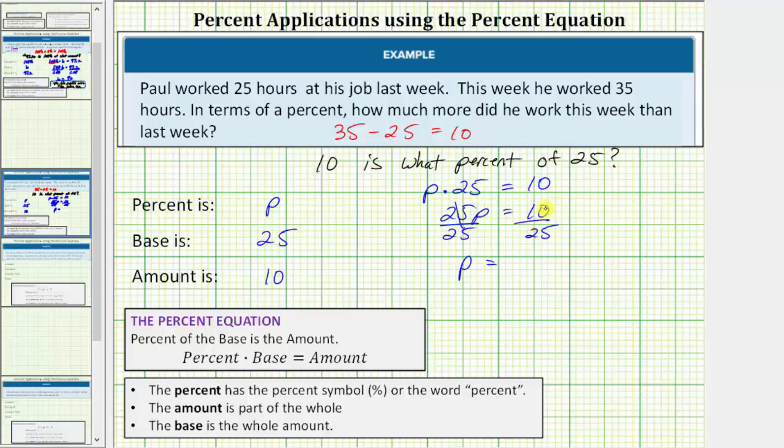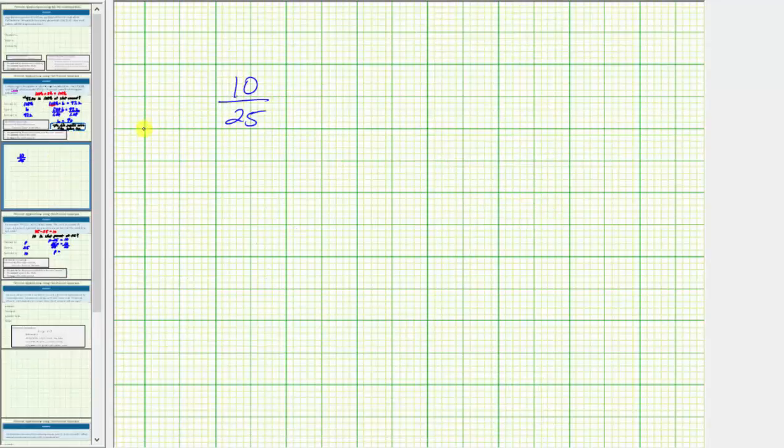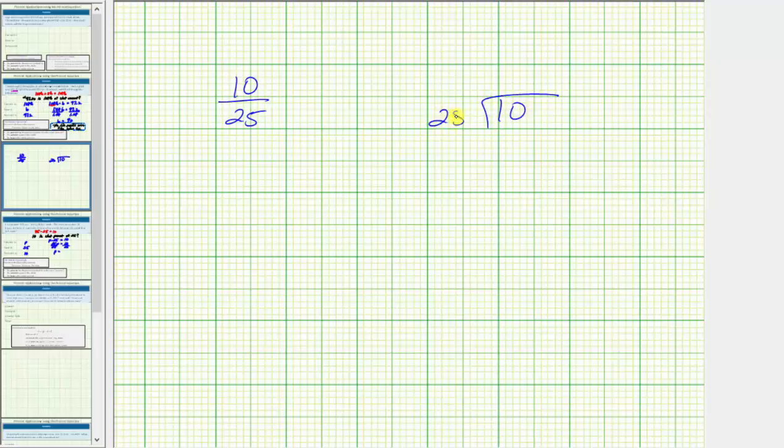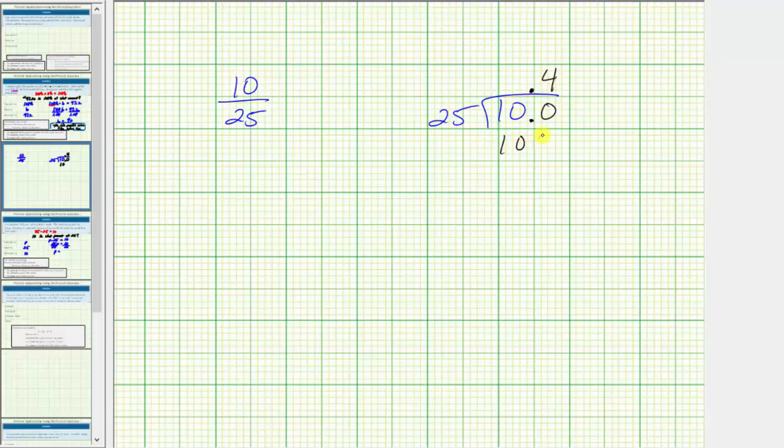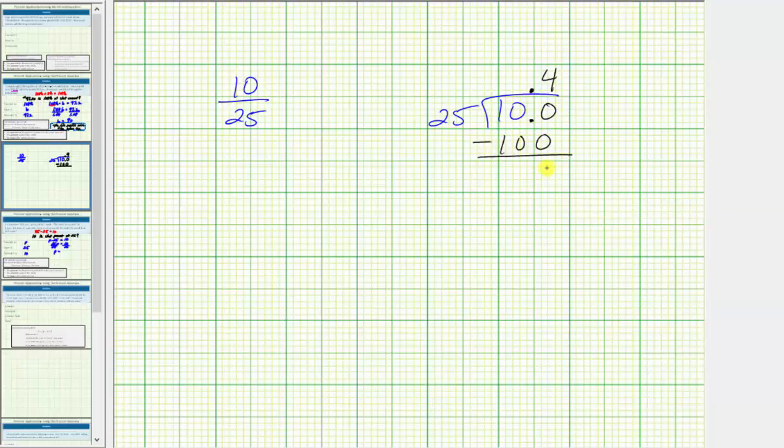Let's find this quotient on the next slide. Let's write this in long division form, so we have 10 divided by 25. Because 25 is larger than 10, we'll put a decimal point to the right of the 10, move it up to the quotient, and now we can add zeros to the right. So we'll add one zero, and now determine how many 25's in 100, which is four. Four times 25 is 100. Subtracting, the difference is zero, so we're done.